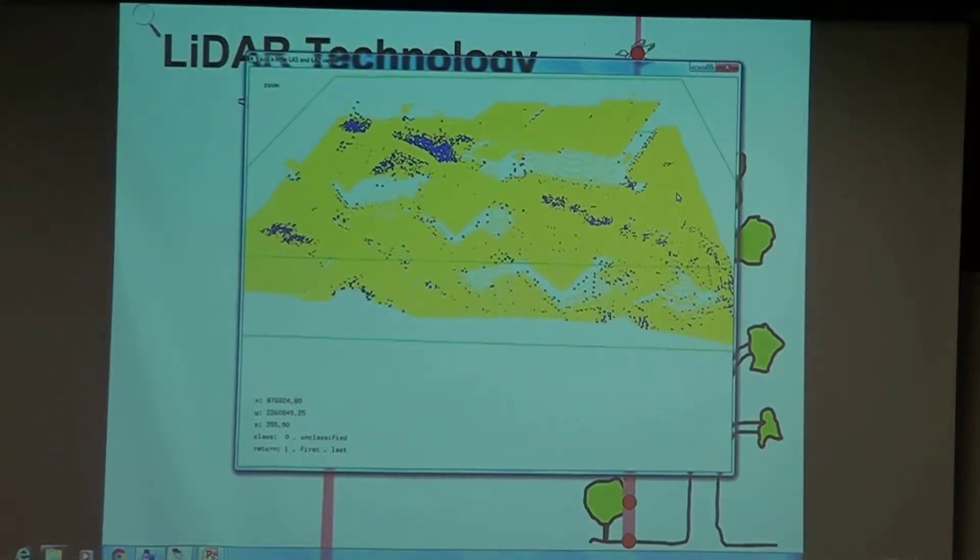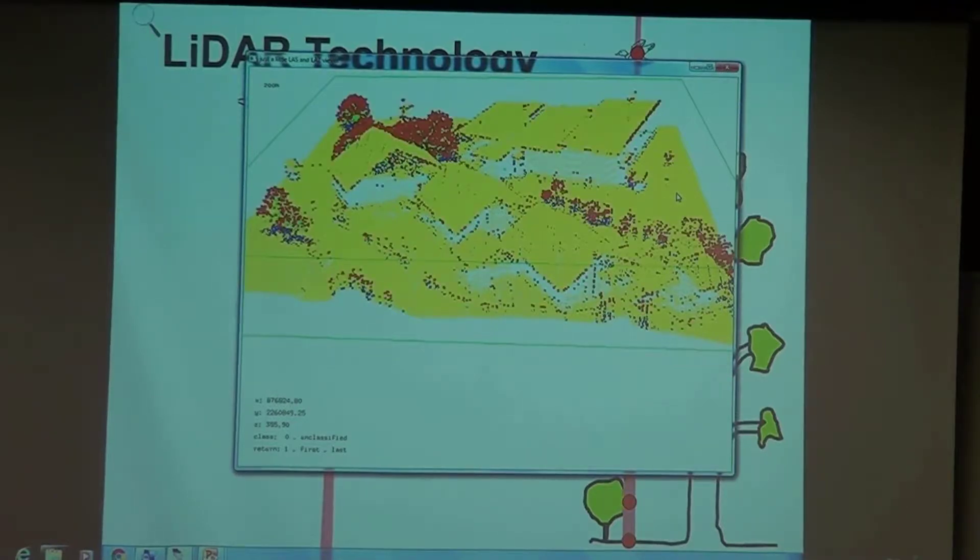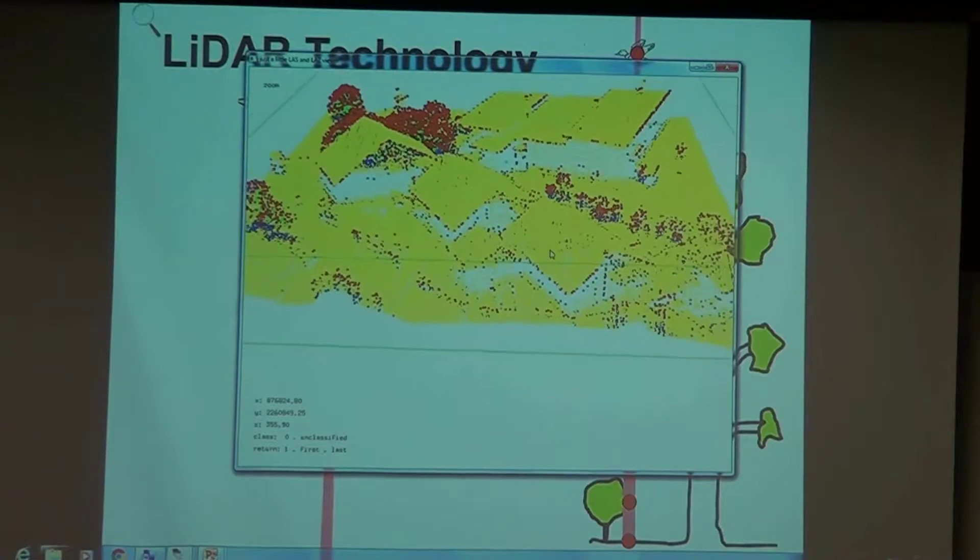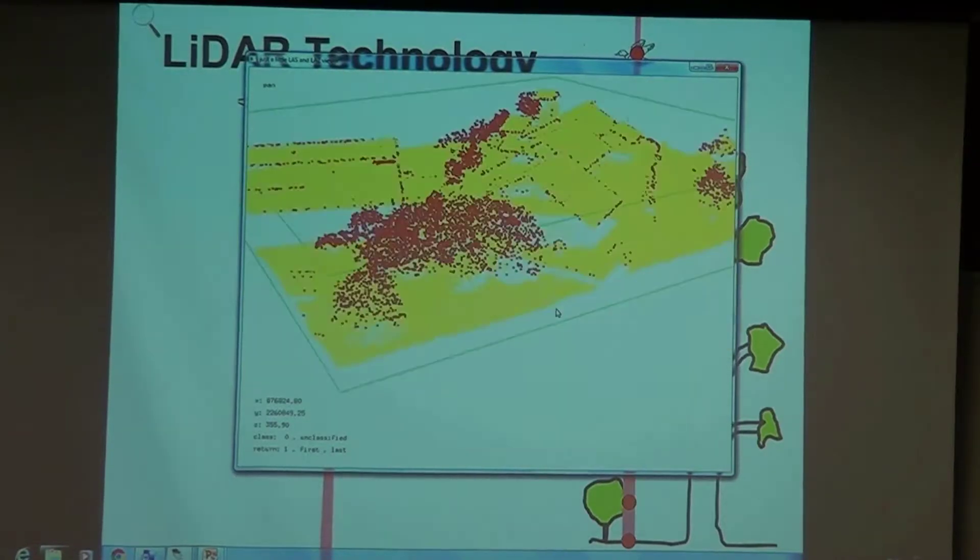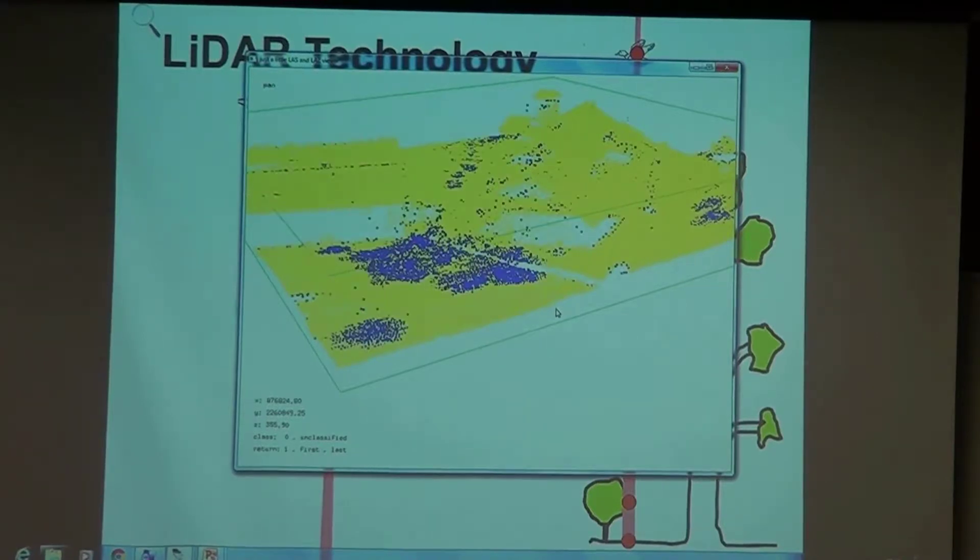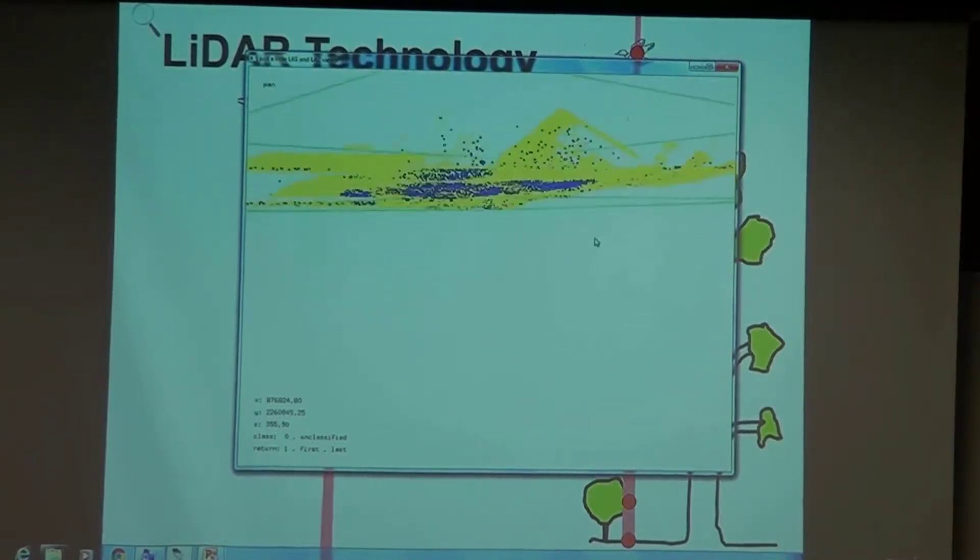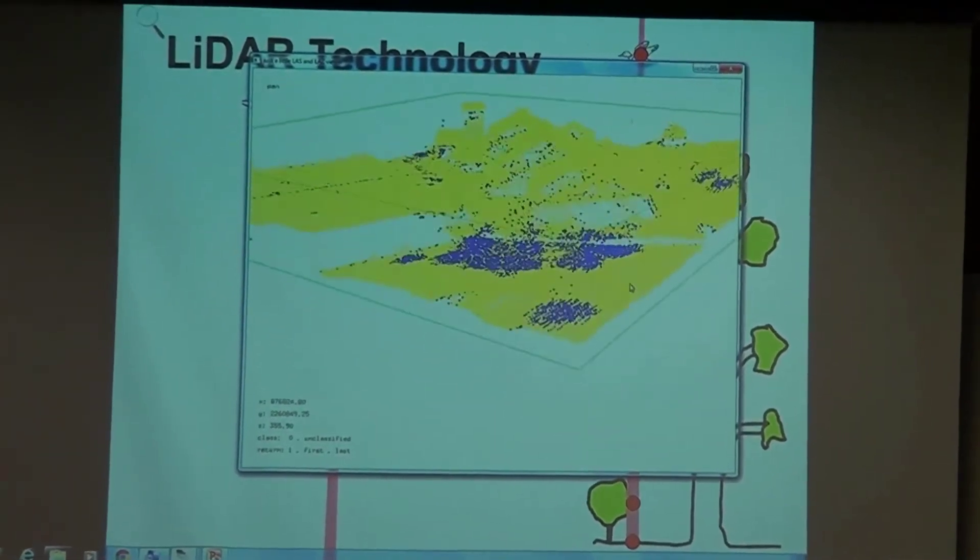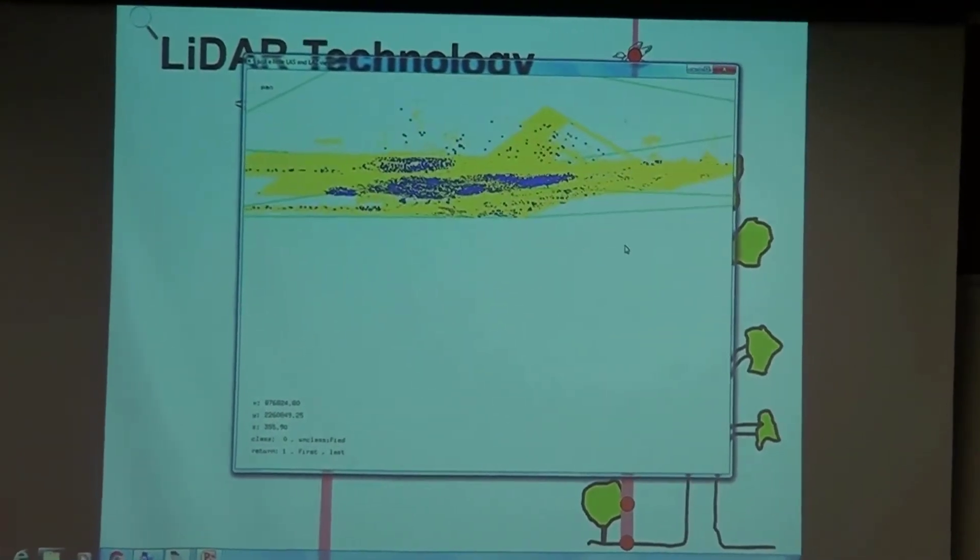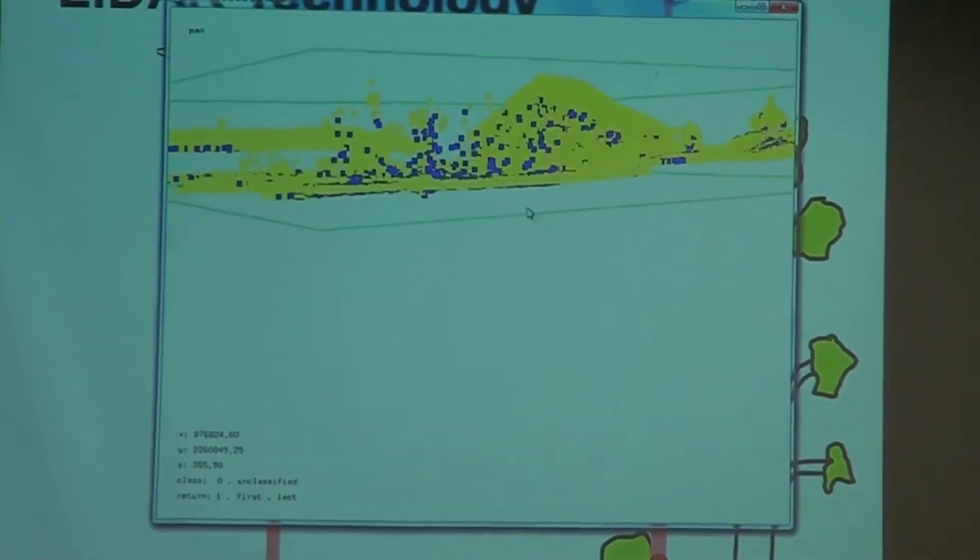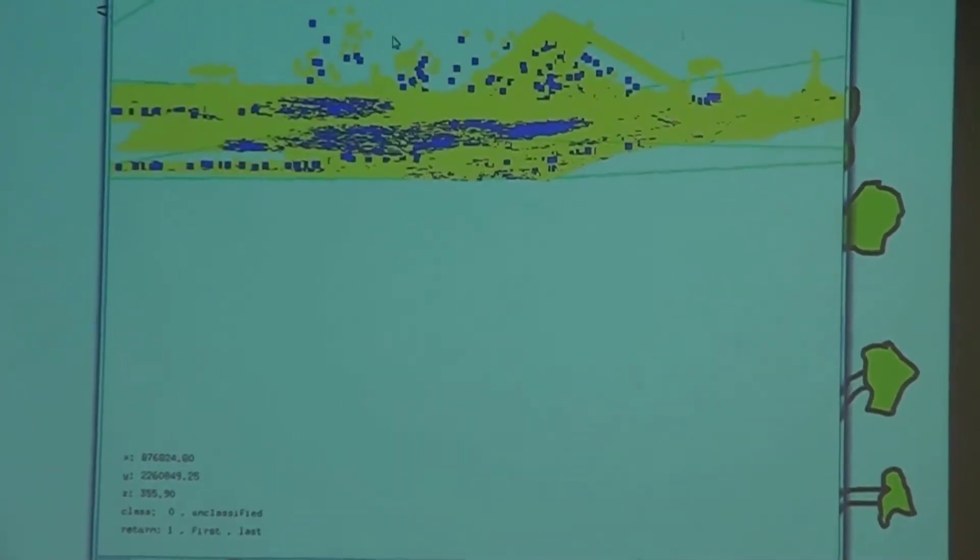Now I press A, I have all the returns again. And very clearly what you can see also is the first returns, and last returns. And you can see I'm not always penetrating to the ground. Sometimes the last return is up here in the middle of the tree.